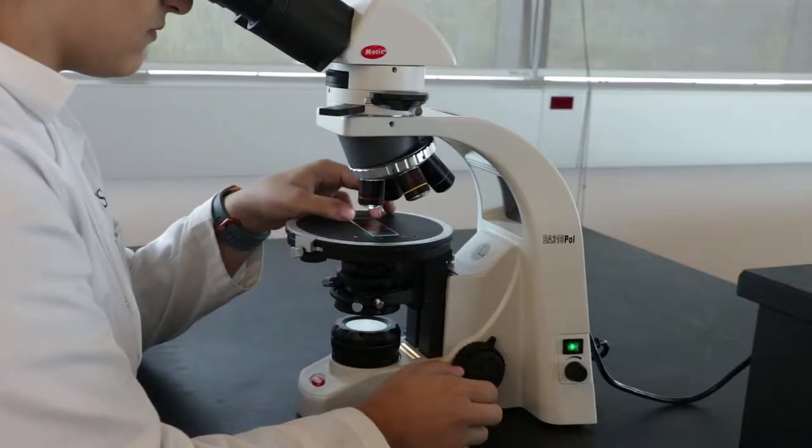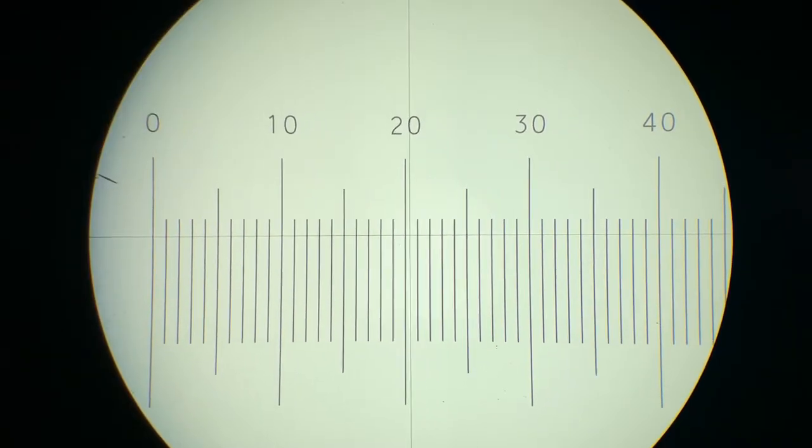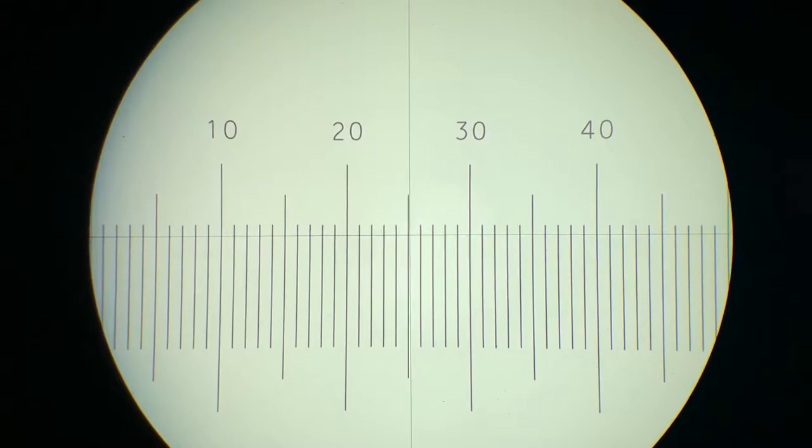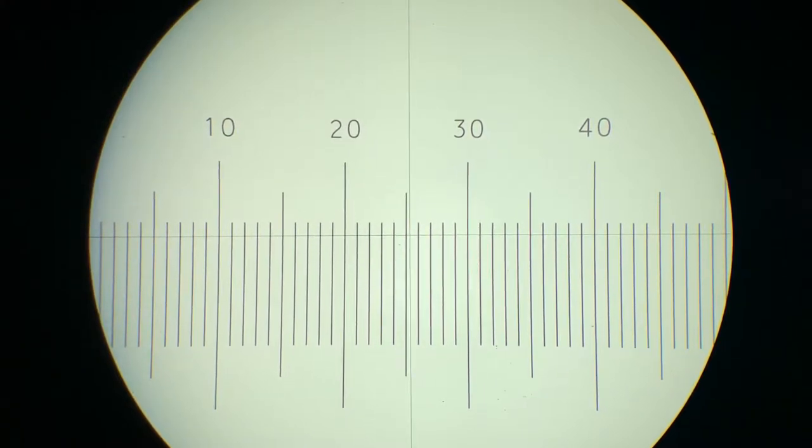Move the slide so that the zero bar is aligned with the left side of your field of view. Read off the bar on the right side of the view for your diameter. As you can see, for the 4x objective, the field of view has a diameter of 5mm or 5,000 micrometers. Write this down.